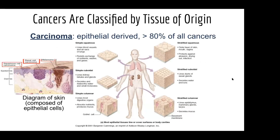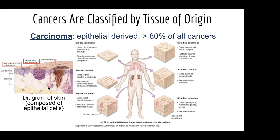Cancers are classified by the tissues of origin. You might have heard the word carcinoma — carcinoma is the most common type of cancer. About 80% of all cancers are carcinomas, and they're derived from epithelial tissue. Epithelial tissue is any tissue that lines something or covers a surface. The most well-known epithelial tissue is our skin.